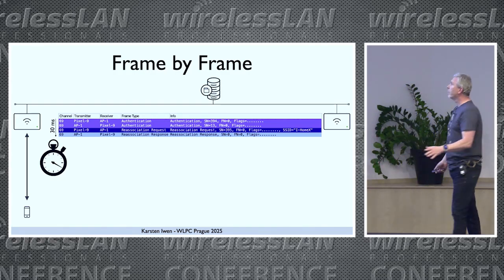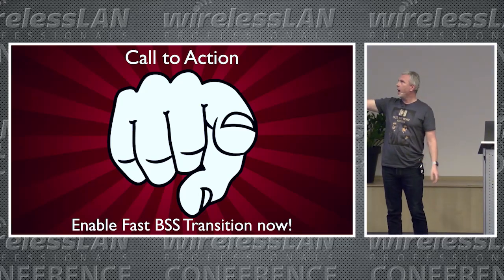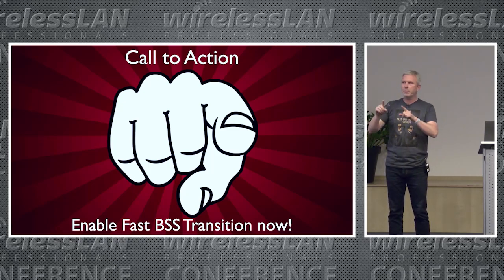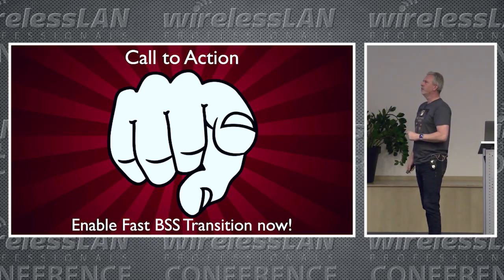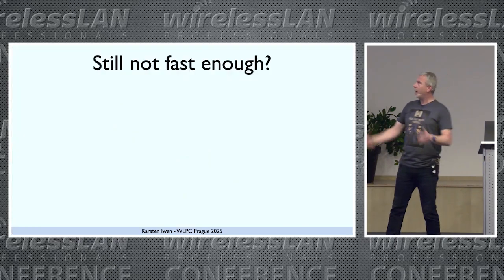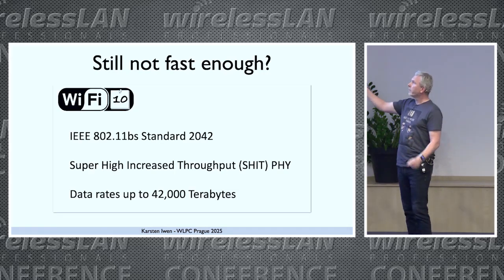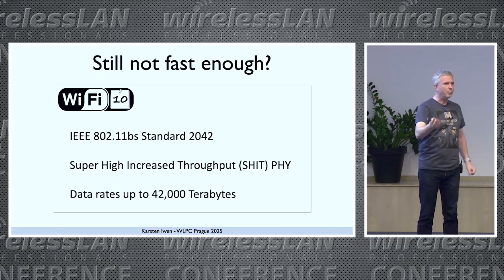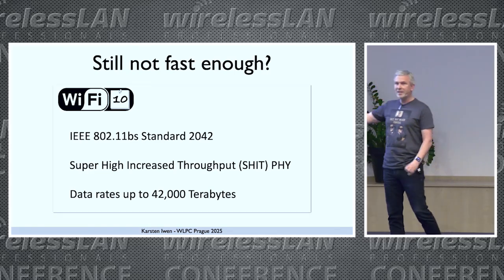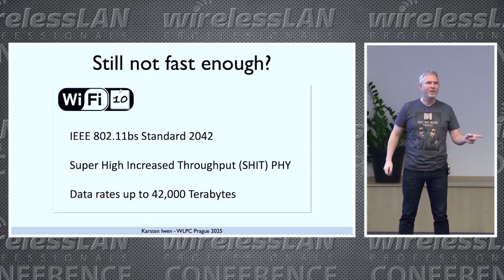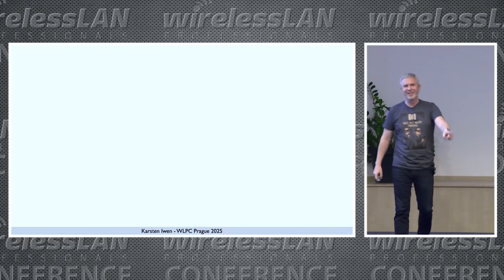My call to action: enable fast BSS transition now. Optionally, think about the disclaimer from the beginning and always know your clients. And if you say that's still too slow and you want it even faster, Wi-Fi 8 can be the solution, or even better, wait for Wi-Fi 10, which Peter presented two years ago. Because with Wi-Fi 10, the client can finish the roam before it even decides to roam — and then it can't get any faster. Thank you.